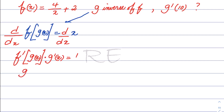Since we're looking for g prime of x, we're going to divide both sides by f prime of g of x, and g prime of x is equal to 1 over f prime of g of x.